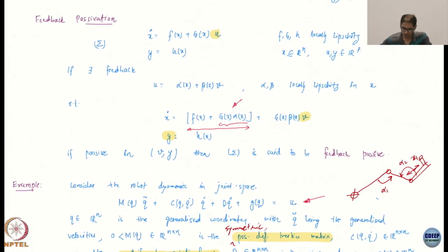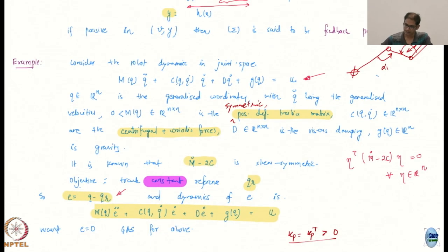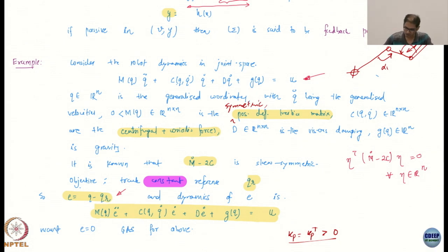I'm going to go over quickly again this example of feedback passivation that we did. This is on the standard Euler-Lagrange model for a robotic manipulator. This is a very general model. If you remember, we talked about this — you can use any kind of coordinates. That is why they are called generalized coordinates, the q's.